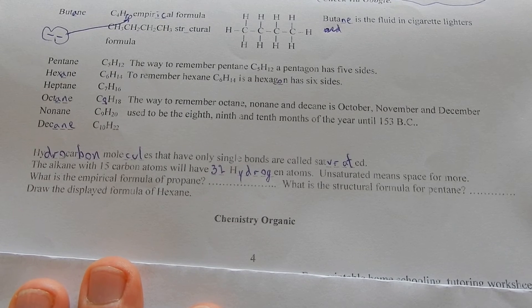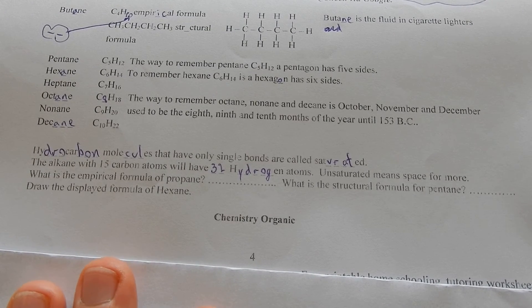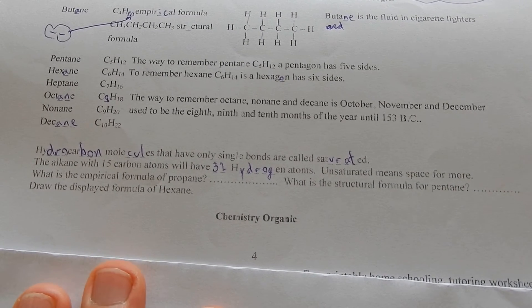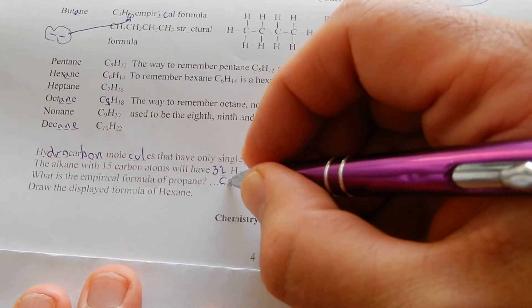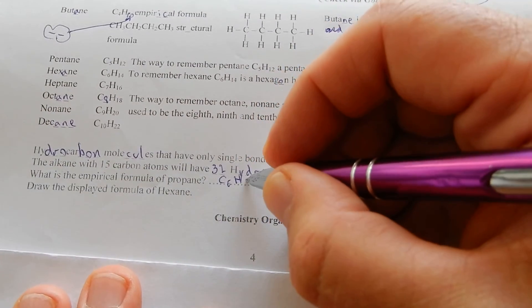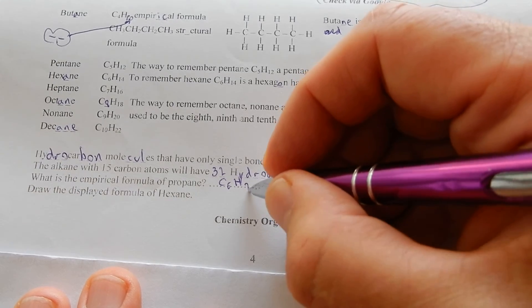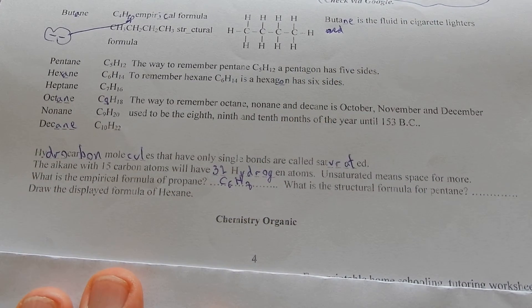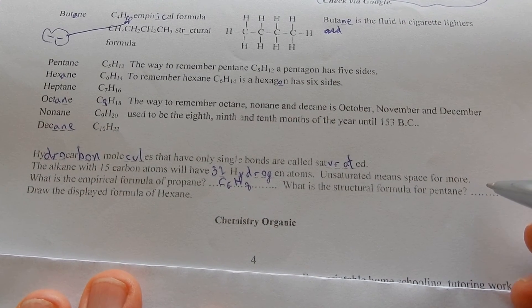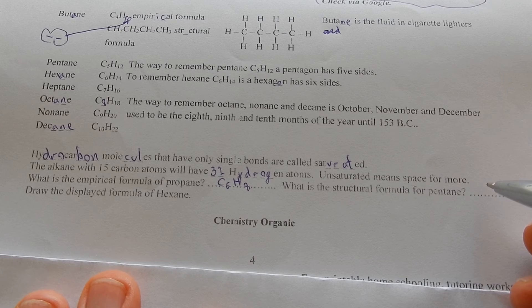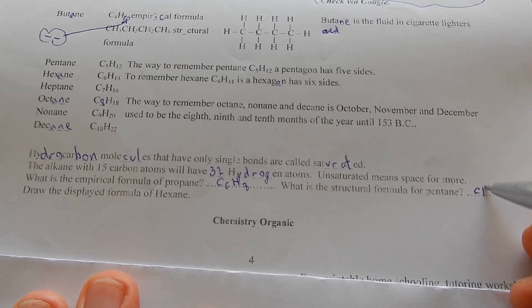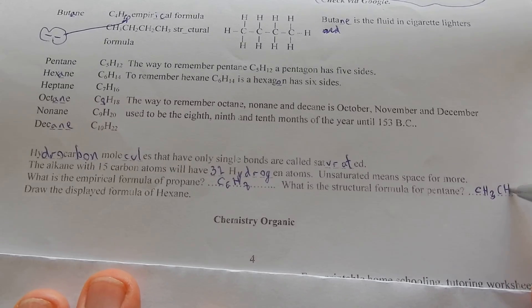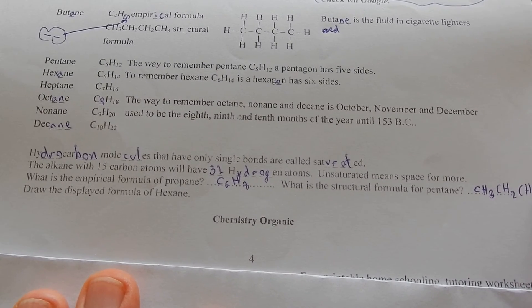Unsaturated means space for more. So what is the empirical formula of propane? C3H8. What is the structural formula of propane? CH3, CH2, CH3.